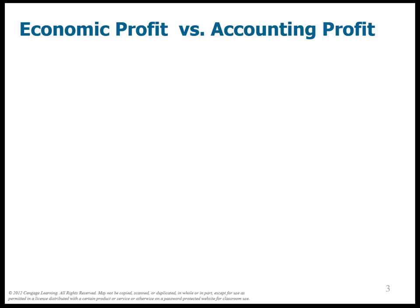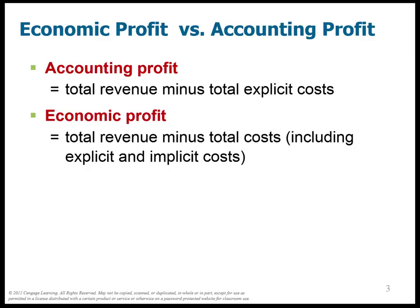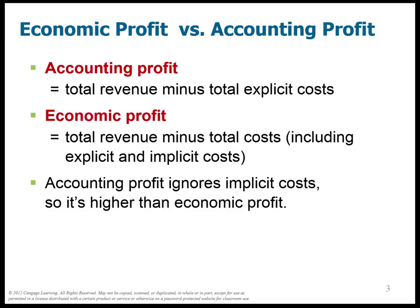Now that we've talked about the different types of costs, let's talk about the different types of profits because they're very related. Accounting profit only thinks about explicit costs, whereas economic profit thinks about the total costs — both explicit and implicit. Accounting profit doesn't include implicit costs, so it's going to be higher than economic profit. In a couple of chapters we're going to see that in many market structures, firms end up earning zero economic profit. If you're thinking of accounting profit, you might wonder how firms can stay open — that's because they're earning a positive amount of accounting profit, but zero economic profit.